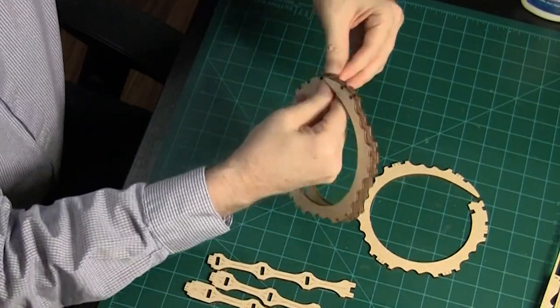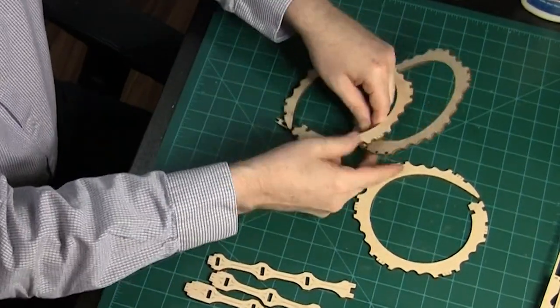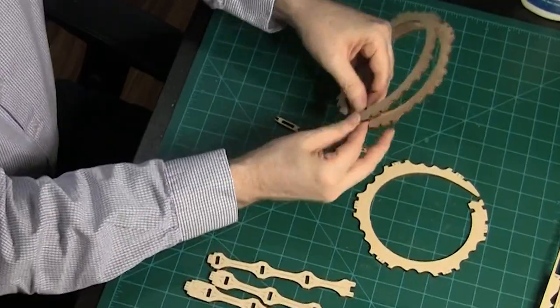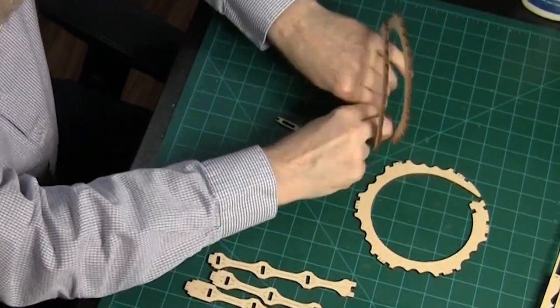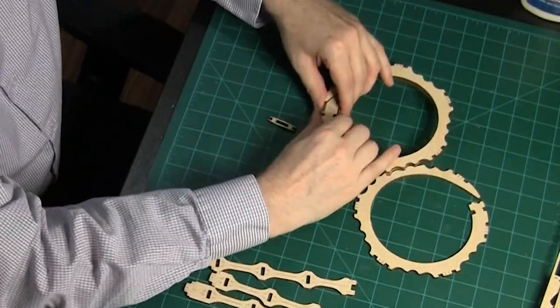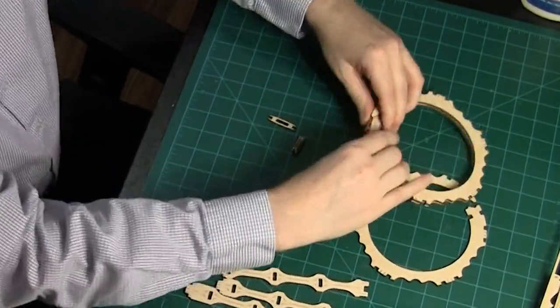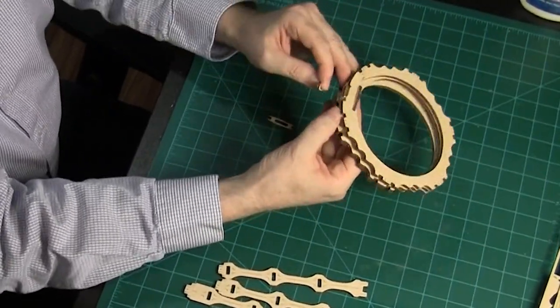First, connect the three ramp pieces. They have to be in the right order. Connect the top and middle piece first with an outside connector, then with a longer inside connector. Then connect the middle and bottom piece with the same two connectors.